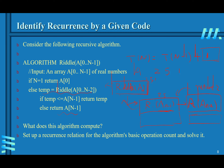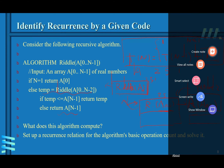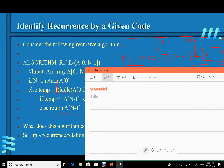The base case requires one constant step. So the recurrence relation is: T(n) = 1 if n ≤ 1; T(n) = T(n−1) + 1 if n > 1. We cannot use the master method here, so we use substitution.